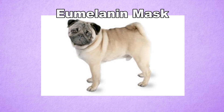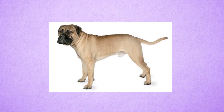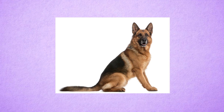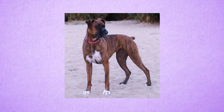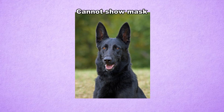Eumelanin masks are in theory the top dominant in the E series, meaning the dog only needs one Big E-M allele to have a mask. Masks can appear on any dog that is genetically sable, tan pointed, saddled, or agouti. In order to display a mask, the dog cannot be dominant black, but a mask can be visible if the dog is brindled or non-black. All the agouti alleles will show masks except for recessive black.